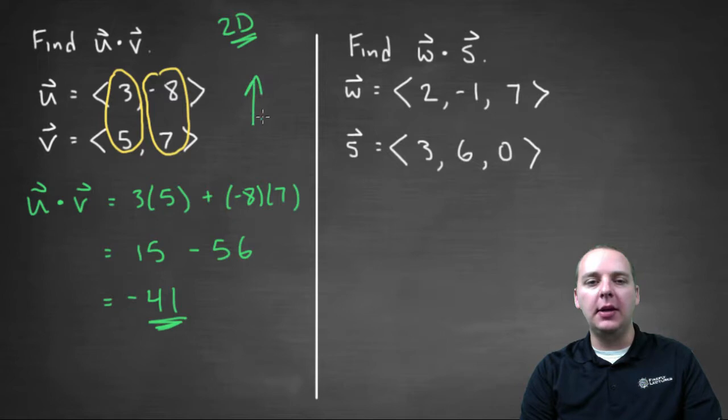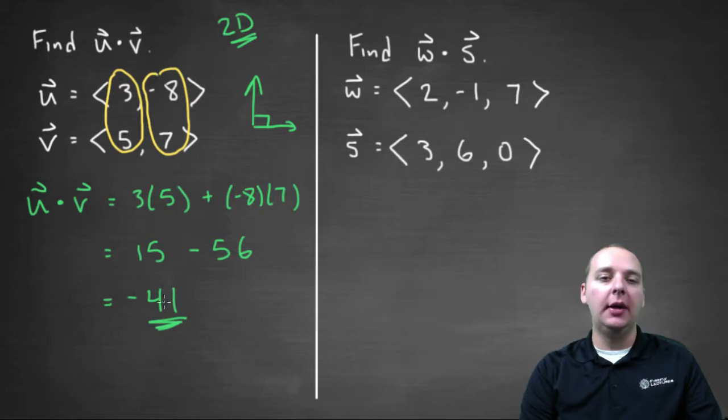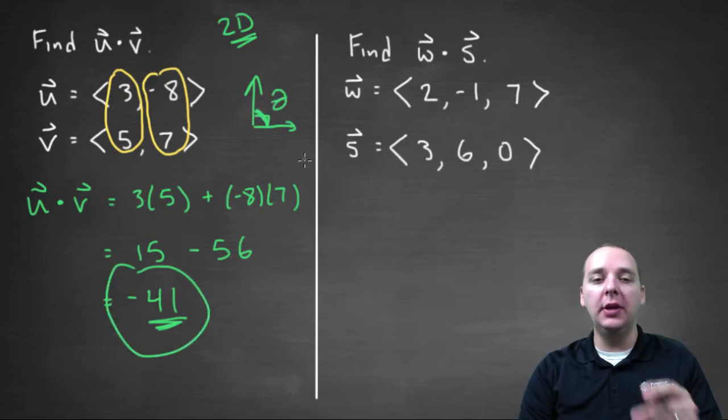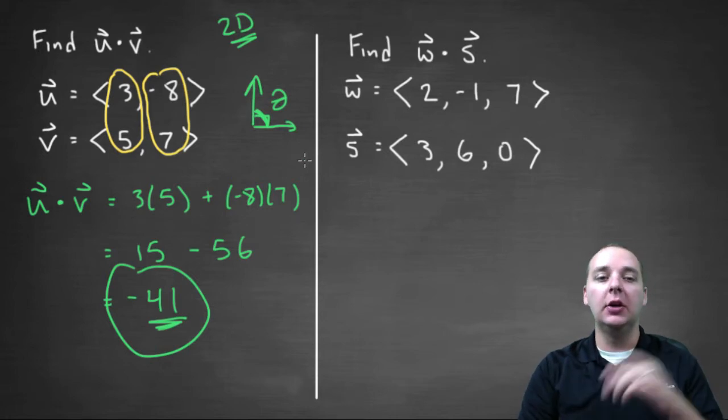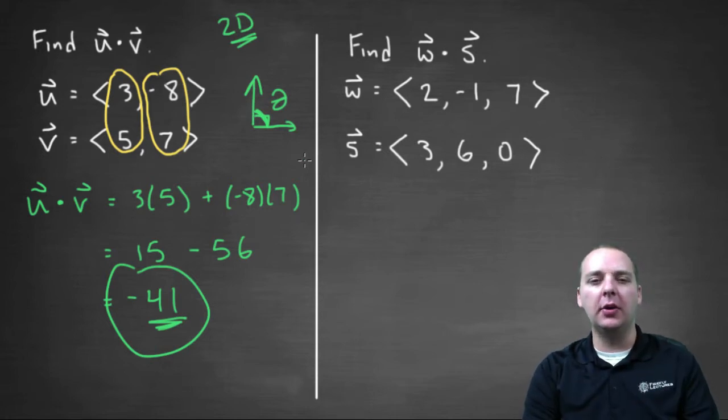These guys do not meet at a right angle. The reason being is the dot product is not zero. Now it turns out there's an alternate definition for the dot product, where you can actually use this number to actually figure out what the angle is between those two vectors. We know it's not ninety, but we can figure out what it is using that dot product, but we're not going to do that in this video.